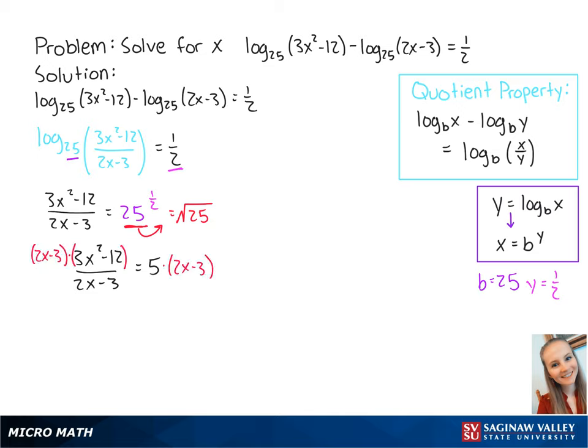To remove the fraction, we're going to multiply both sides by 2x minus 3. This gets us 3x squared minus 12 equals 10x minus 15.